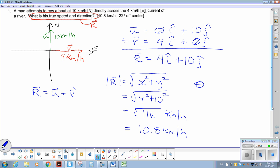The angle. Tan inverse. Y component over the X component. Tan inverse. Y component is 10. X component is 4. So doing that calculation, 10 divided by 4. I get 68 degrees.